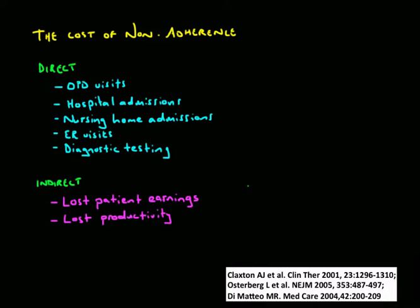If we think about the cost of non-adherence, we usually think in terms of direct costs and indirect costs. The direct costs would be things like increase in outpatient department visits, hospital admissions, admissions to nursing homes, visits to the emergency room, and unnecessary or extra diagnostic testing.